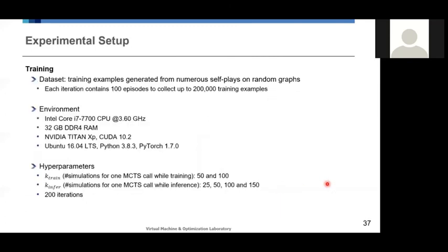We have set up the experiments as below. We trained the neural networks by playing a number of iterations, each of which consists of 100 episodes, while collecting up to 200,000 training examples. We also have a number of different K parameters, which is the number of simulations for one MCTS call. And we have maintained two different K values for the training process and inference process.